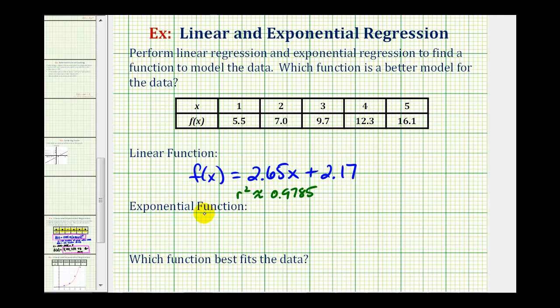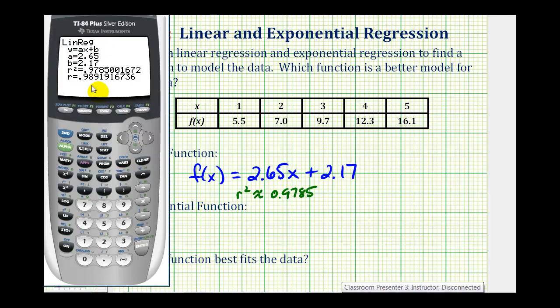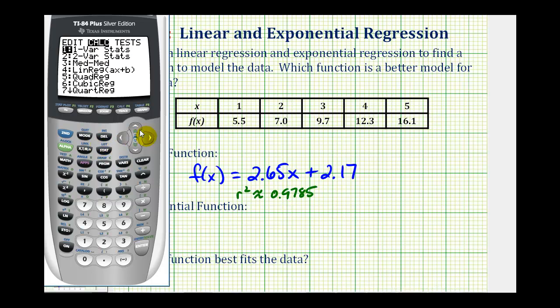Now we'll perform the exponential regression and compare the r-squared values. The data is already entered, so we just need to press the stat key, right arrow for calculation, and then scroll down to exponential regression, which is zero, right below nine. Here it is, ExpReg. Press enter and then enter again.